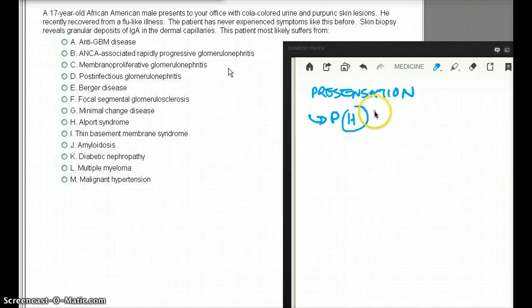And the time it takes from the primary insult to the IgA nephropathy is about 2 to 3 days. So they are going to say either they had an upper respiratory tract infection or a skin infection, which happened 2 to 3 days, and soon after they are going to have this cola-colored urine or hematuria. So this patient has said that he recently recovered from a flu-like illness.